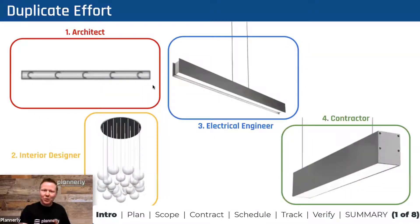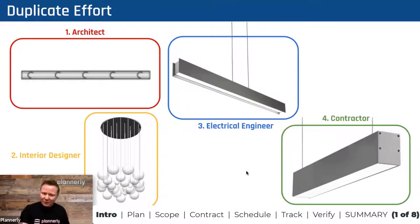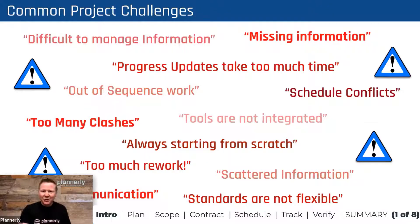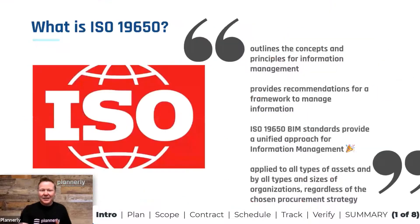If nobody knows what they're supposed to be doing, we can end up with a lot of duplicate effort. In this example, we have the same light fixture being modeled by four different parties on a project, and that is wasteful. It is unnecessary, but it occurs a lot in our design and construction industry. We can end up with out-of-sequence work, too many clashes, lots of rework, lots of conflicts, and data that's very difficult to understand.